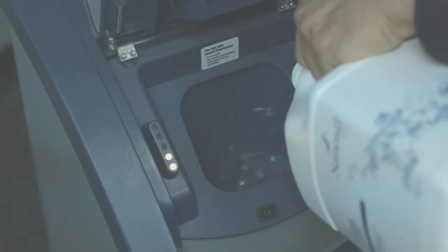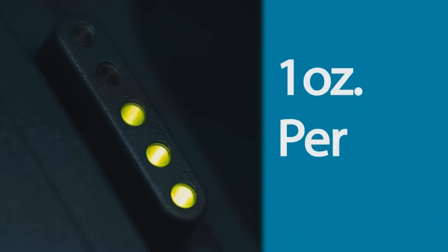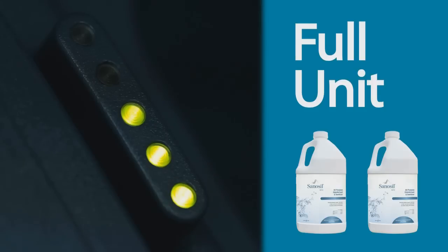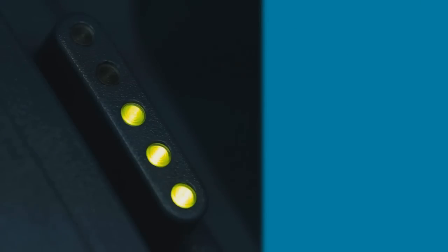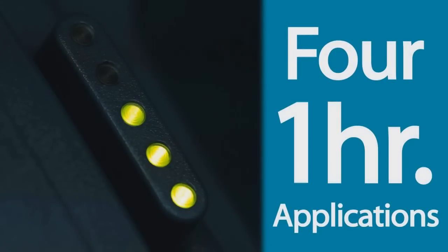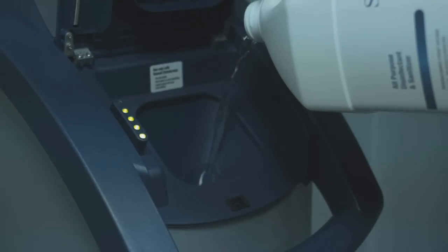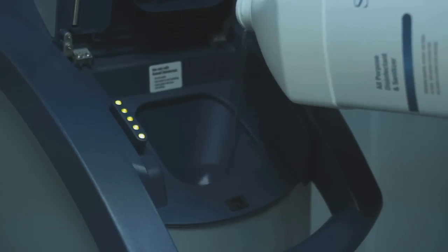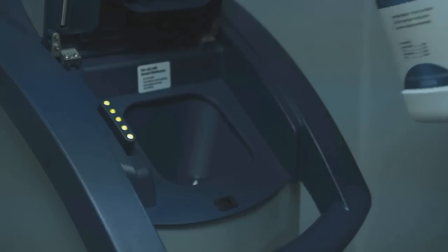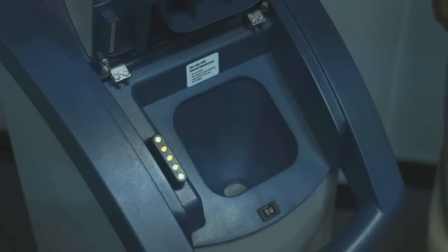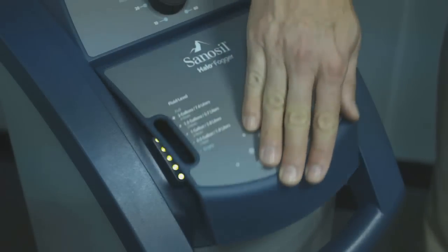In operation, the Halo dispenses approximately one ounce of Sanosil per minute and holds up to two gallons of disinfectant when full, enough for four one-hour applications. Stop pouring when the top green light on the fluid indicator is illuminated. Do not overfill. Wipe up any spills and close the reservoir door, ensuring it clicks shut.